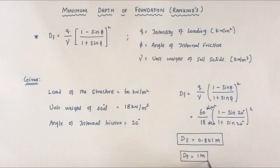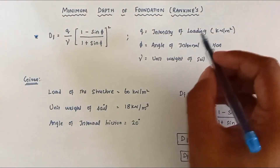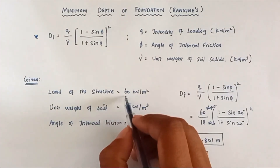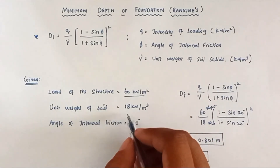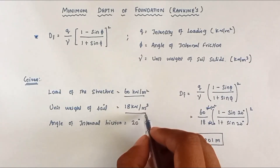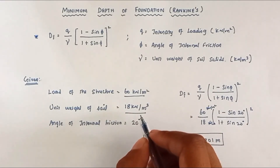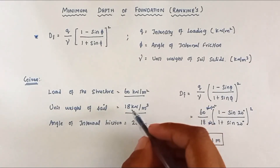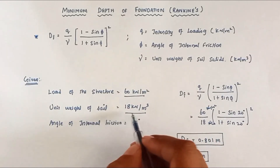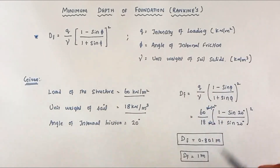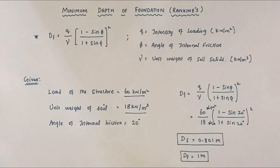For the given loading of 60 kN per meter square, which is very low, and a unit weight of soil of 18 kN per meter cube indicating good bearing capacity, the minimum depth of foundation is 1 meter. Thank you.